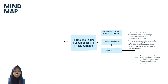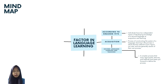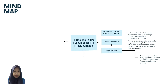According to Krashen (1997), individuals have two independent means of developing knowledge of the second language: acquisition and learning. Acquisition is the process of constructing the system of the language. Learning is the process in which learners attempt to form and figure out rules, and are generally aware of their own process. Second language learning and teaching is a complex process that many approaches, theories, and methods have been put forward to define.